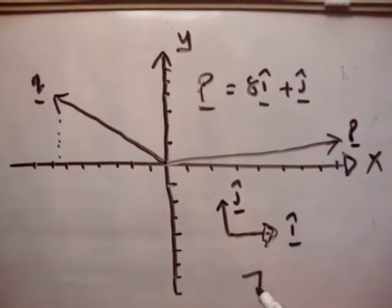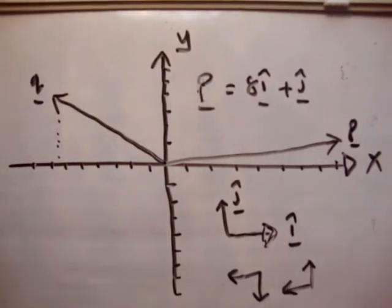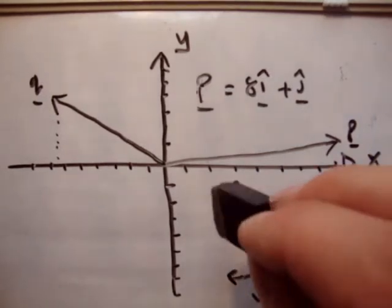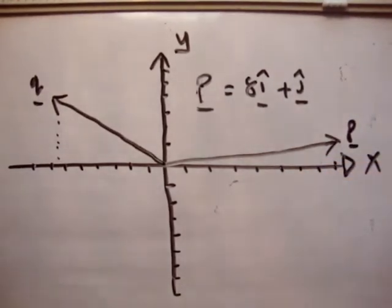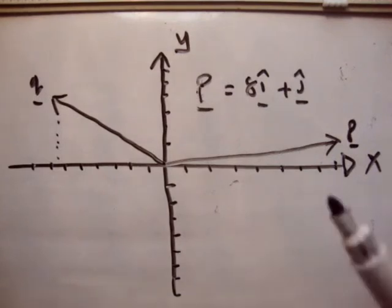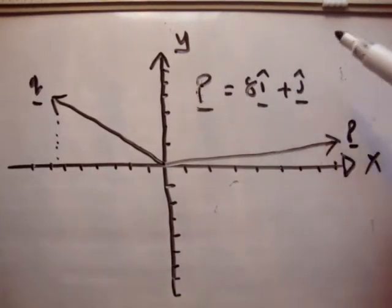Of course we could define them different ways if we want, but I'm going to define them as I have here. So this means that it's 8 units in the positive x-axis and 1 unit in the positive y-axis.